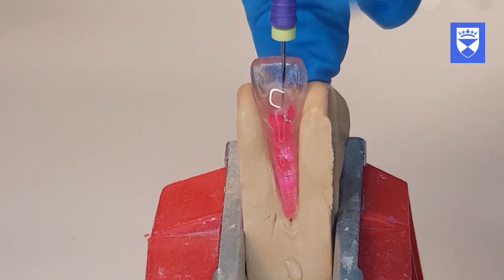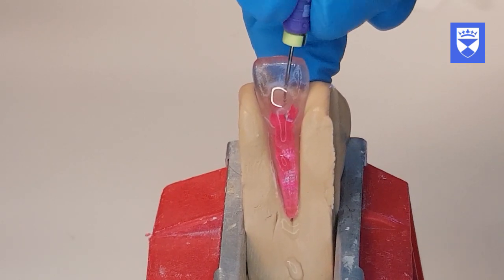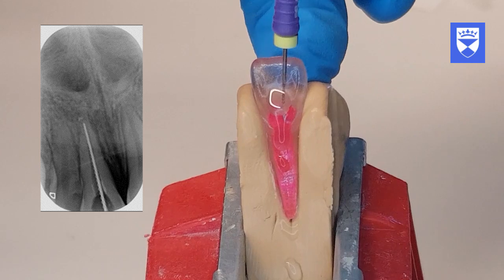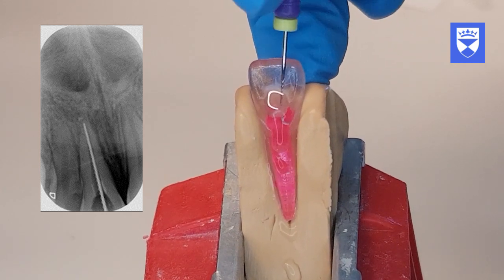Once the estimated working length is reached, the working length of the tooth should be confirmed either with a radiograph or by using an electronic apex locator.